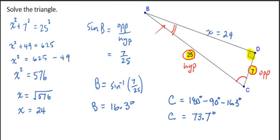And now we've solved the triangle completely, because we have the value for x, we have the value for angle B, and we have the value for angle C.